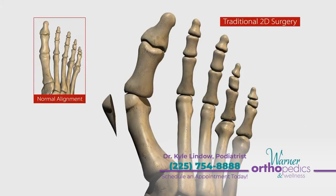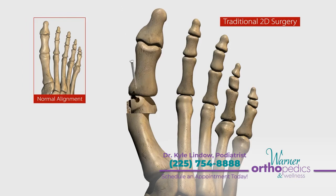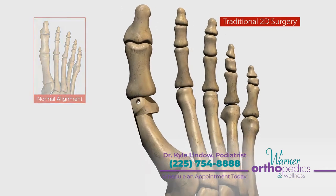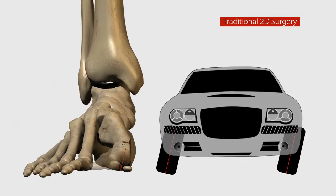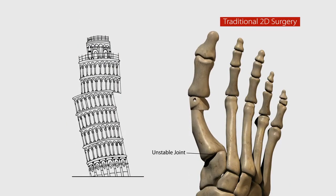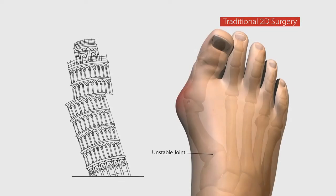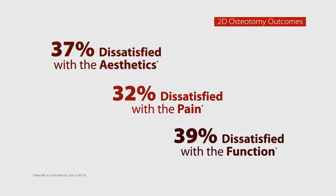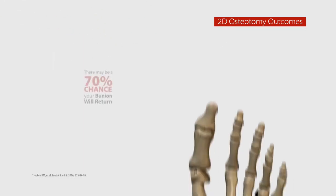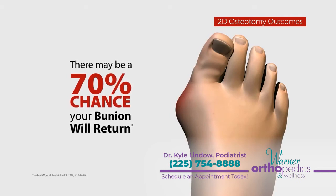These 2D procedures target the painful cosmetic bump, primarily addressing the symptoms — not the root cause. In an osteotomy, the surgeon cuts the metatarsal bone in half and then pushes the top part over to reduce the appearance of the bump. This cut-and-shift approach is like putting a band-aid on the problem: your bone is now crooked and remains rotated. The unstable joint remains, so the bunion is prone to returning. Studies show about one in three patients are unsatisfied with the aesthetics, pain, and function following a 2D osteotomy, and there may be a 70% chance that your bunion will eventually come back.